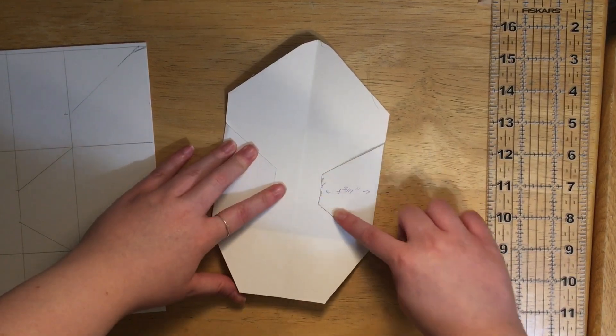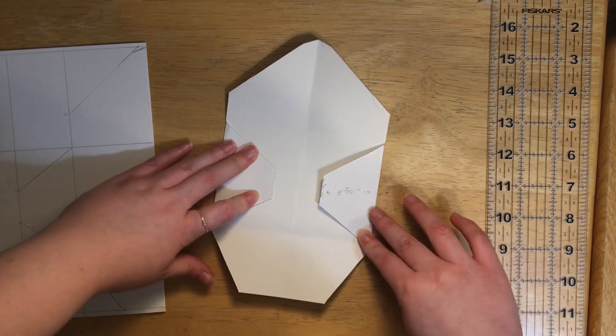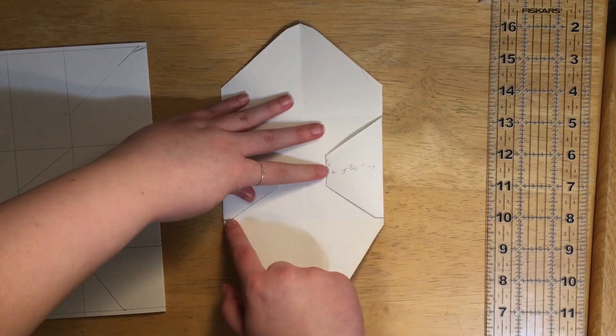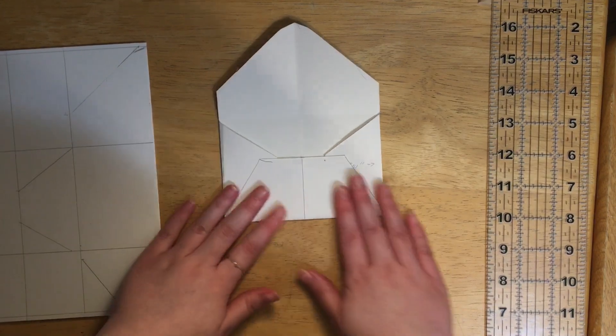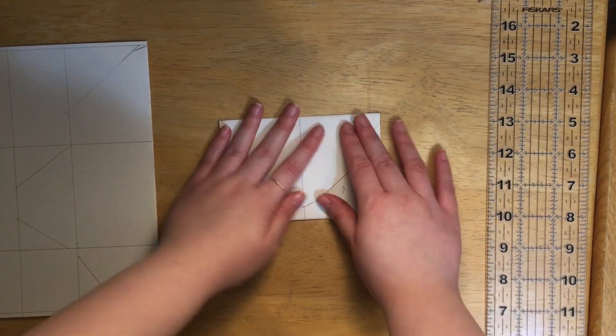And then you're going to put glue along this edge and along this edge and fold it up and you'll have your envelope. And that's it.